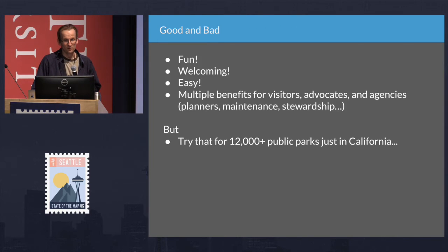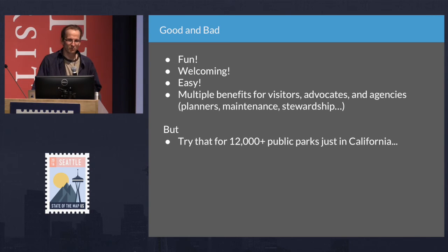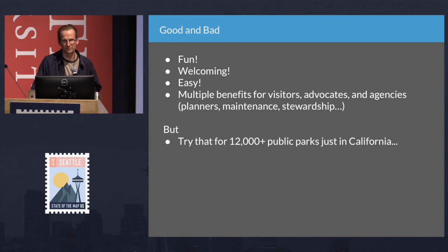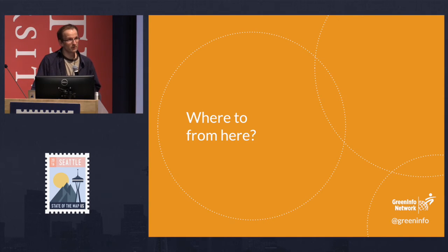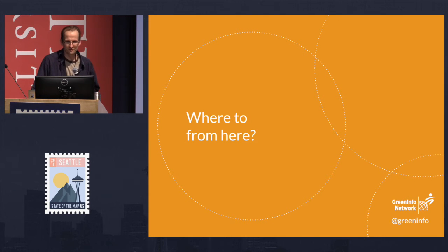The photo survey method was really fun, easy, and welcoming, with easy ways to provide benefits both to OpenStreetMap and to the agency. The challenge is it's hard to scale — 12,000 parks in California, not to mention the other 135,000 nationwide.